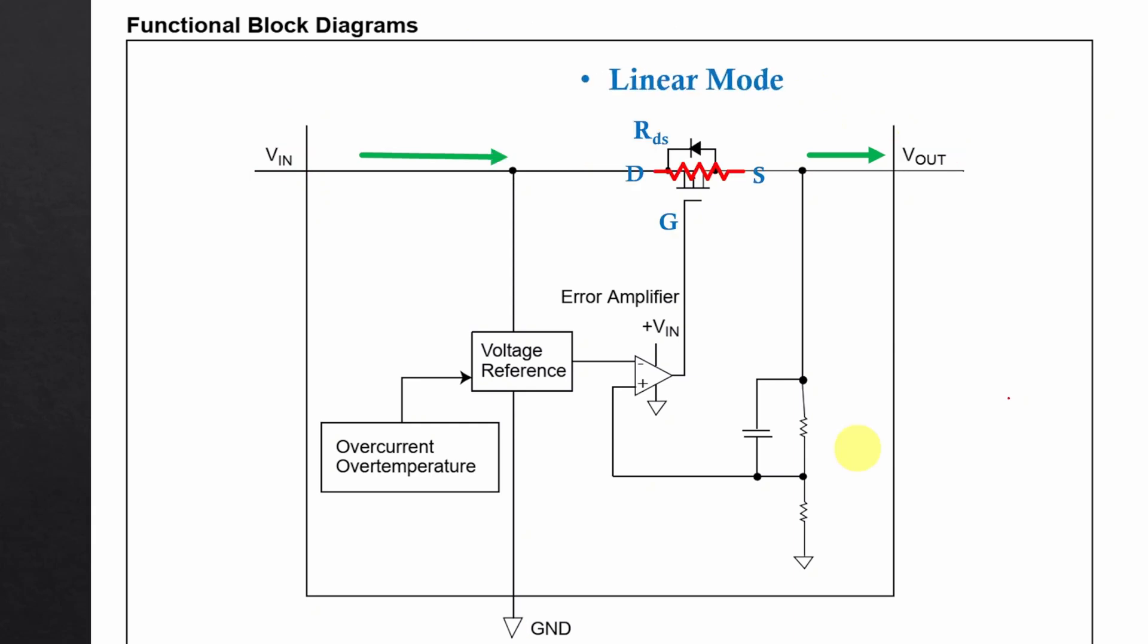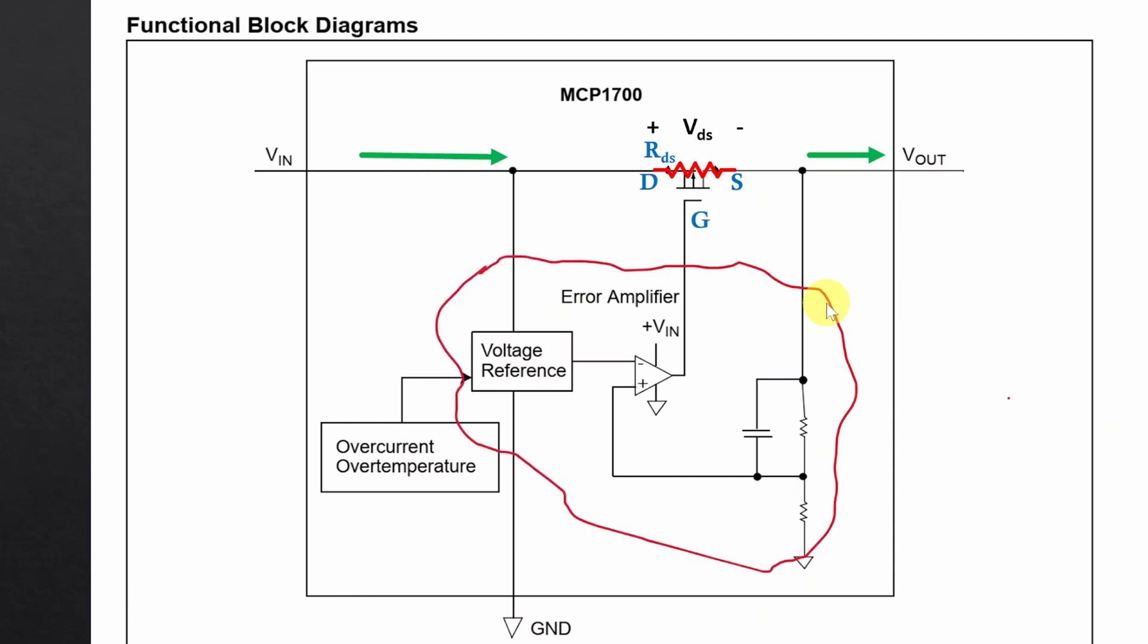The CMOSFET operates in linear mode and behaves like a voltage controlled variable resistor. This means the drain to source resistance RDS can be changed by controlling the gate voltage of the CMOSFET. This circuitry senses variations in input and output voltages of the regulator and changes RDS accordingly. By changing RDS, the drop across the MOSFET is adjusted to keep output voltage constant under all operating conditions.